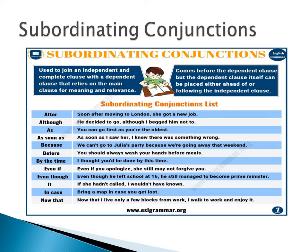Let's take a look at the examples. 'Soon after moving to London, she got a new job.' 'She got a new job' is our independent clause. 'Soon after moving to London' is your dependent clause, and the subordinating conjunction used is 'soon.' Now let's take the reverse — beginning with the independent clause 'she got a new job,' followed by the dependent clause 'soon after moving to London': 'She got a new job soon after moving to London.' As you noticed, the meaning of the sentence does not change whether the dependent clause is placed at the beginning or at the end. Take another example: 'He decided to go, although I begged him not to.' Or: 'Although I begged him not to go, he decided not to go.'